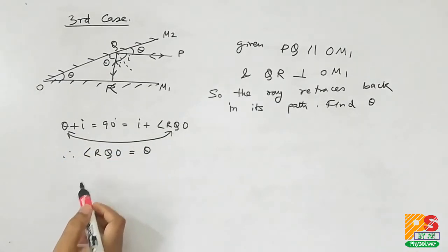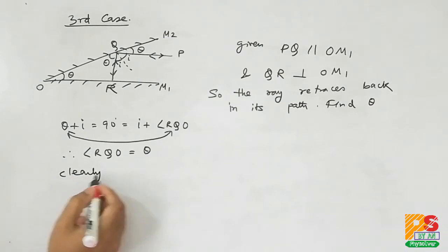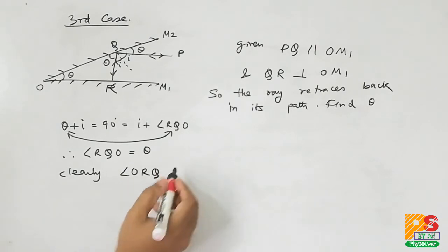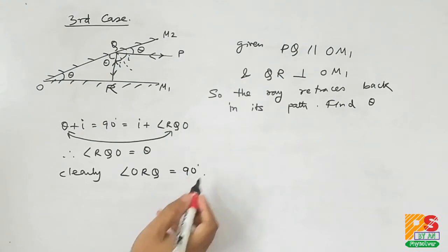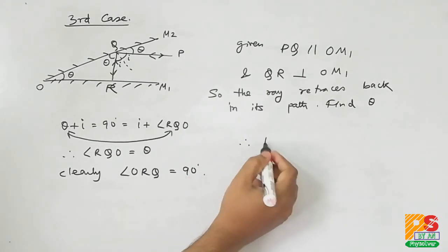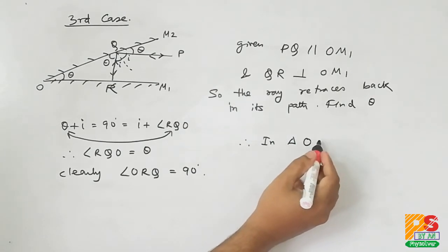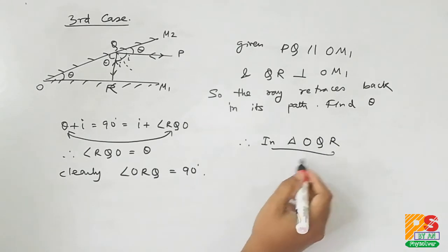Now it is given that QR is perpendicular to OM1, so angle QRO equals to 90 degrees. Now in triangle OQR, sum of the three angles should be 180 degrees.